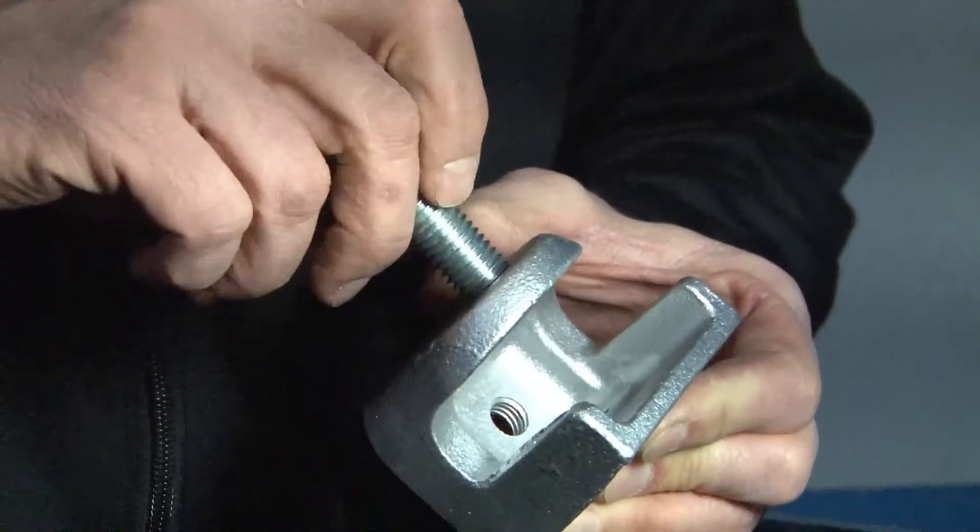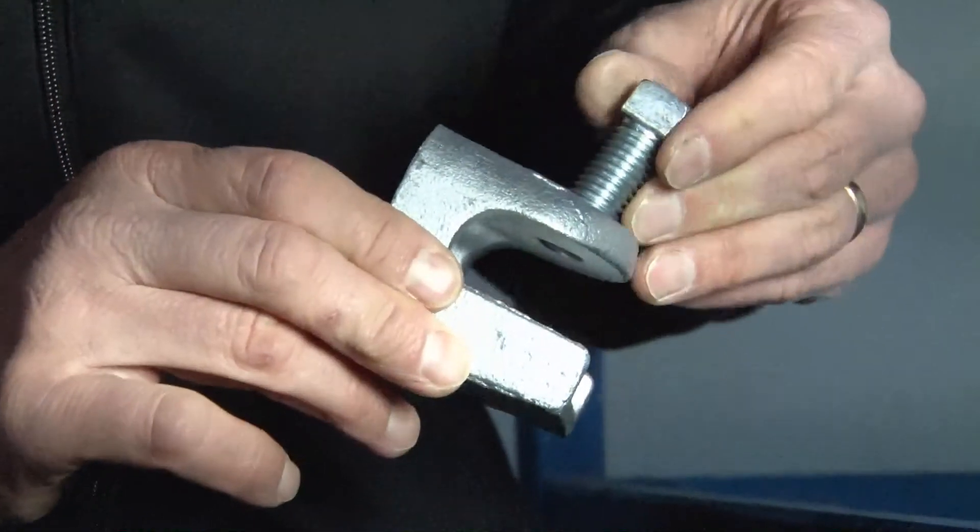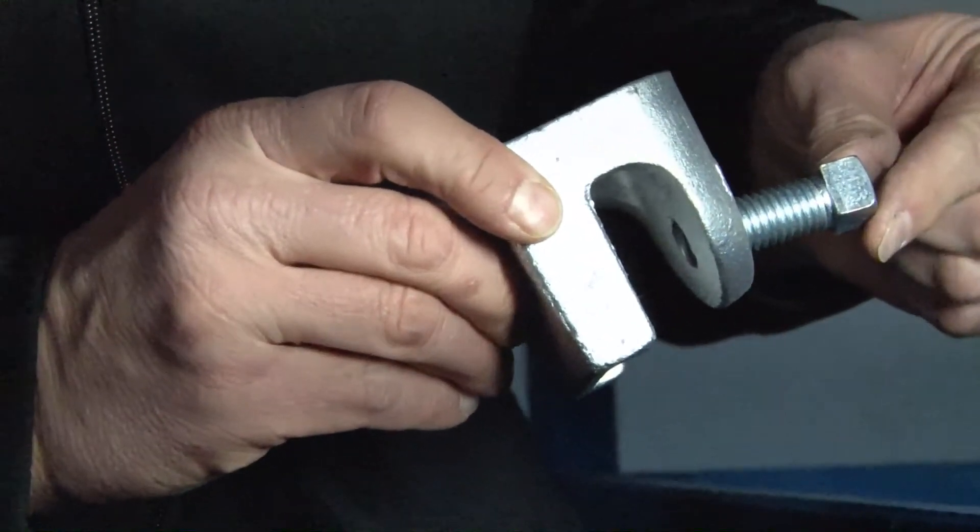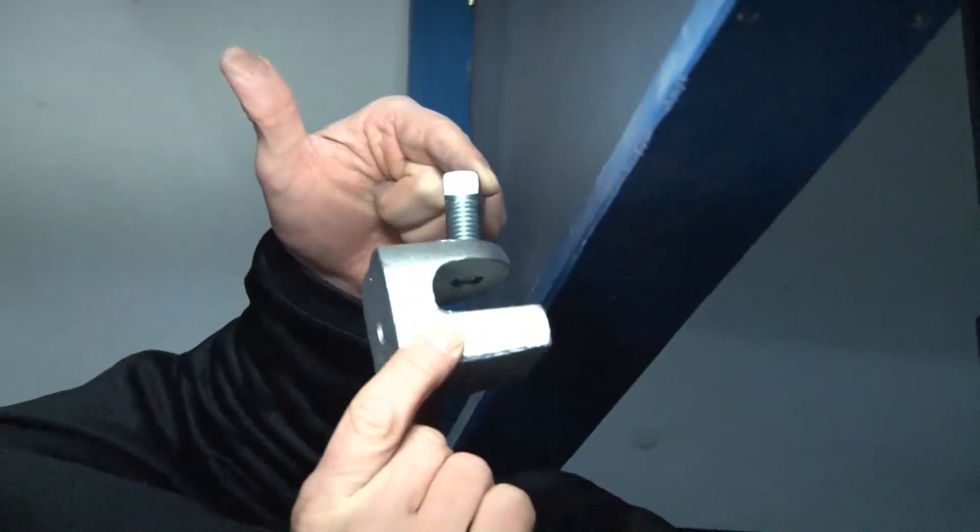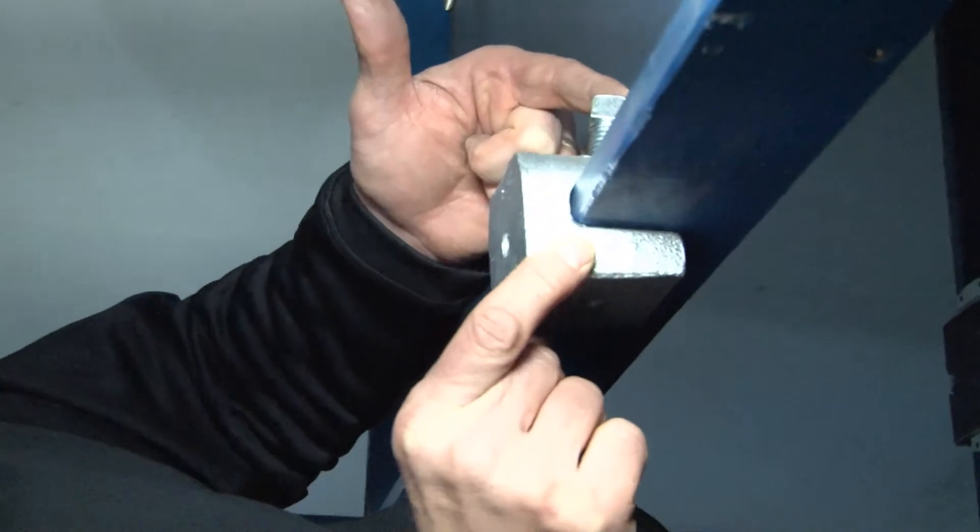When you're installing a heavy duty load and you need half inch fasteners, you install this product like so. Simply align the beam clamp with the edge of the beam wherever you would like to place it and slide it in place.